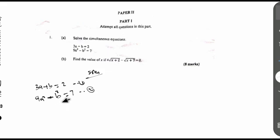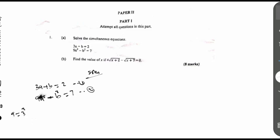To make it easy, consider equation 2. Notice that 9 can be written as 3 raised to the power of 2, because 3 times 3 gives us 9. So this 9 can be expressed as 3 squared, making equation 2 become: 3 squared times A squared minus B squared equals 7.